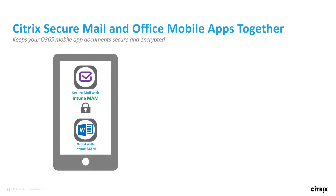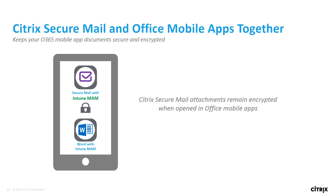In addition, Intune can manage Secure Mail, which helps your users be more productive. For example, a user can click on an encrypted document attached to an email in Citrix Secure Mail, which can use OpenIn to access the Word document, all while keeping it encrypted inside the Intune MAM container. This applies to all Secure Mail Office 365 attachments, which remain encrypted when using OpenIn with Office mobile apps.